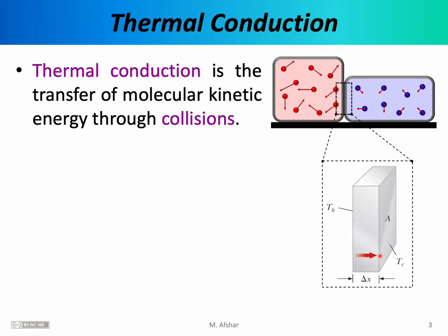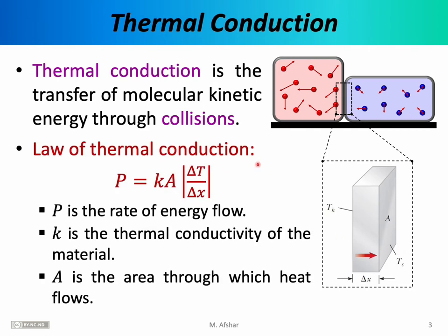For a quantitative understanding of thermal conduction, we zoom in on this boundary. In most cases, the two objects are separated by a partition or wall of some kind. We describe the area of that wall by the letter A and the thickness by delta X. The temperatures of the hot and cold objects on the two sides are referred to as T sub H and T sub C. The flow of energy through the wall from the hot object to the cold is dictated by the law of thermal conduction.